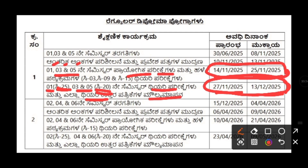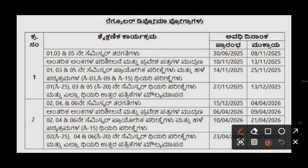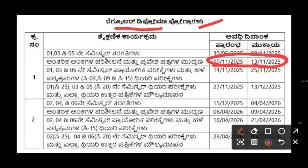The exact timetable will be shared in your college, and once you receive your hall ticket you can see the exact theory exam timetable on it as well. The hall ticket printing period is from 10/11/2025 to 13/11/2025. Every piece of information is given in this table for regular diploma program students.